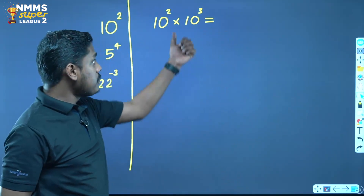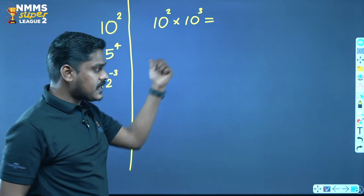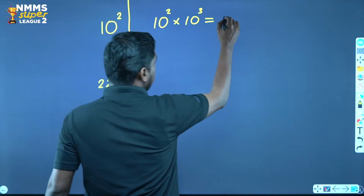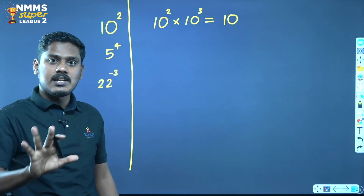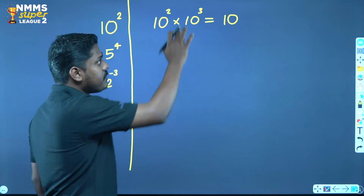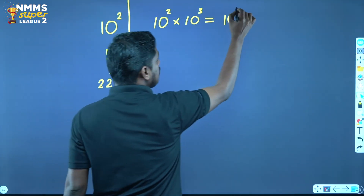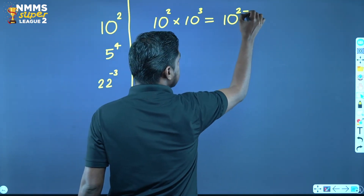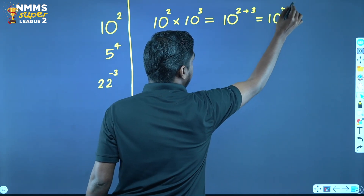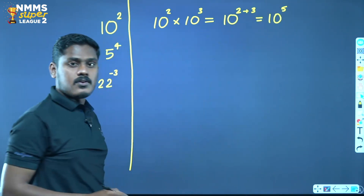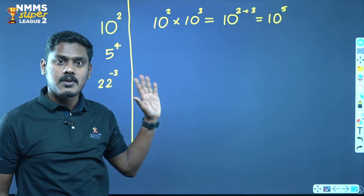This is 10 and this is 10 — this is the same base. This is the exponent and this is the exponent. 2 plus 3 is equal to 5, so 10 raised to 2 plus 3 is equal to 10 raised to 5.